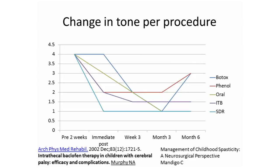This slide shows the change in tone per procedure. Botox, phenol, oral antispastics, and intrathecal baclofen all slowly bring down spasticity depending on how you titrate the doses, allowing the family to gradually adjust. When you do a selected dorsal rhizotomy, a child preoperatively at Ashworth 3 or 4 can drop almost two full points by the next post-op day. This can horrify a parent who has seen their child stand on spastic legs for years — now the legs are wobbling. But this is a normal response: the muscles are still active and need to be retrained.